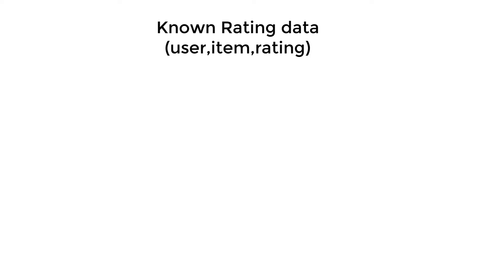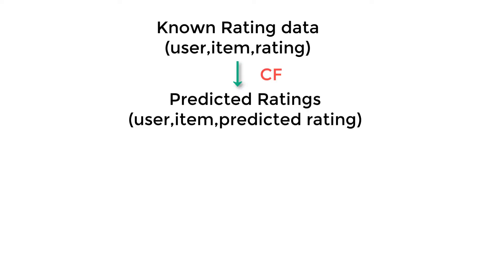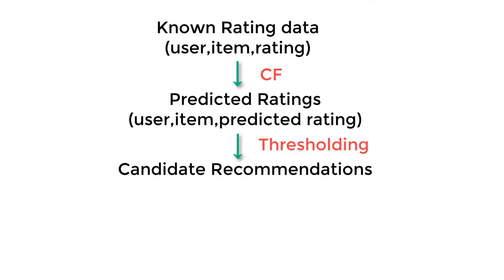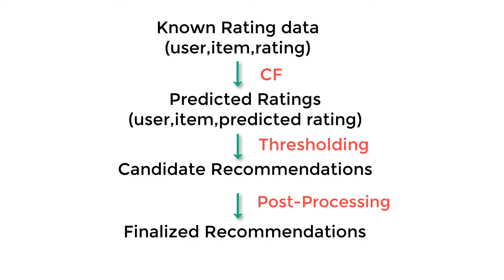To address this concern, many recommendation diversification algorithms have been proposed. Like these approaches, we first predict unknown ratings using a collaborative filtering approach. Using thresholding, we generate a set of acceptable recommendations for each user. Finally, we post-process these candidate recommendations to improve diversity.